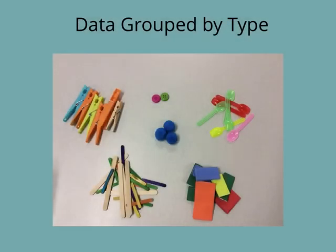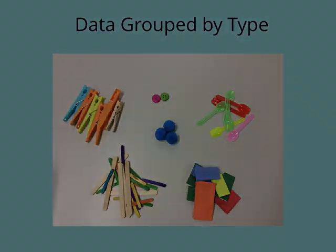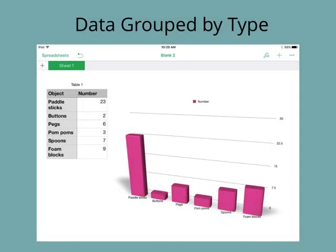This is data grouped by type. We have pegs, buttons, pom-poms, spoons, foam blocks and paddle pop sticks. This is a chart for data grouped by type. Paddle Pops is the biggest, buttons are the smallest.